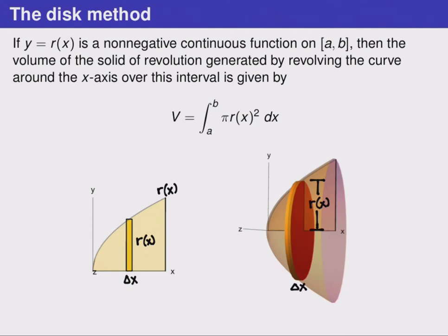We have pi times the radius squared times delta x. When we take the limit as the number of cylinders goes to infinity, we get an integral, and that integral adds up the volumes of all these cylinders, giving us the exact volume of the shape in the same way that an integral gave us the exact area under a curve.